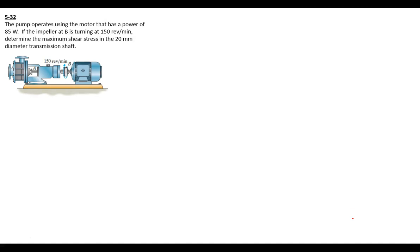In this one we have a pump that operates using a motor. The motor has a power of 85 watts and the impeller at B is turning at 150 revolutions per minute. You are determining the maximum shear stress and you've been given a diameter of the transmission shaft of 20 millimeters. You've been given a power, an angular velocity, and you're trying to find this maximum shear stress.